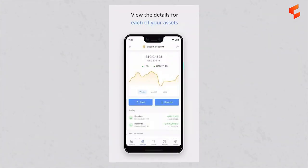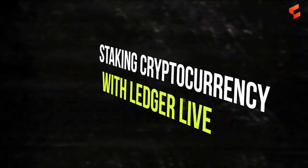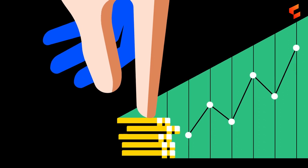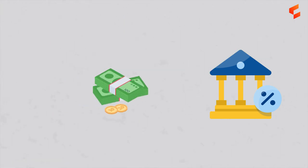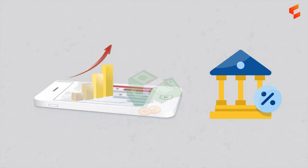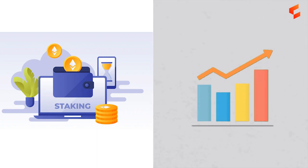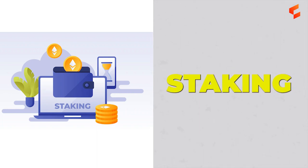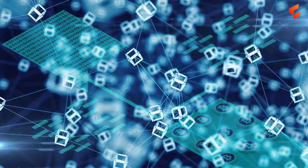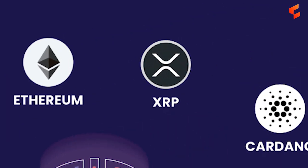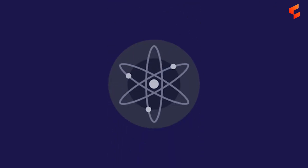You can also stake certain cryptocurrencies through the Ledger Live application. Staking cryptocurrency is similar to, but not exactly the same as, earning interest from your bank on a savings account. With staking, you earn rewards in return for locking up or staking your cryptocurrency in special contracts that help secure the blockchain network. There are multiple cryptocurrencies you can stake from Ledger Live, including Solana, Tron, Polkadot, Atom, and much more.